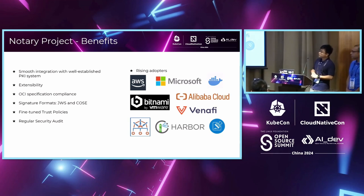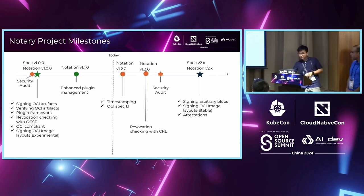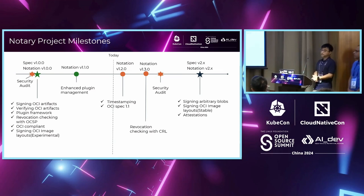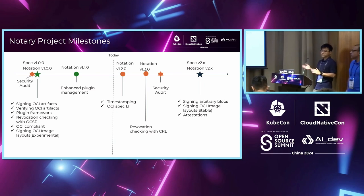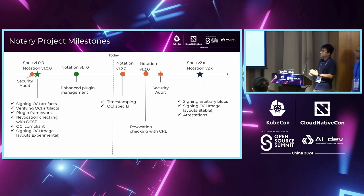You can see we have adopters from major cloud providers and popular open source projects, and the number of adopters is increasing. Last year we released the first stable release of Notary Project specification and the notation tool, along with a third-party security audit. We then released notation v1.1, which enhanced the plugin framework so users can easily install and distribute plugins. Currently we are working on notation 1.2, releasing this month.